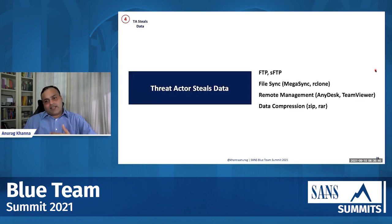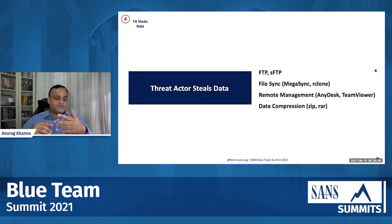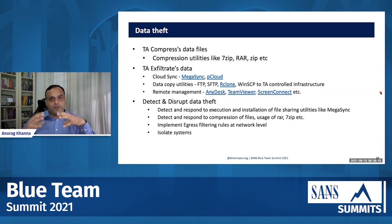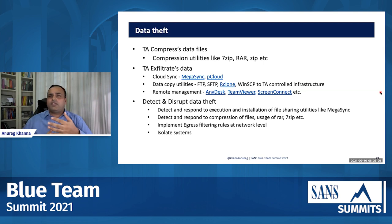Once the threat actor has elevated credentials and gained domain privilege access, they again start moving laterally. But first, let's talk about two very critical steps that make ransomware attacks what they are: stealing data and destroying backups. Stealing data follows a specific workflow — the threat actor accesses systems with critical data, copies, compresses, and exfiltrates it. Compression is often done using utilities like 7zip, RAR, or ZIP. Exfiltration is done using cloud applications like Megasync or Pcloud, utilities like FTP, SFTP, WinSCP, or remote management tools. This is probably the last opportunity to effectively limit what the threat actor can do.